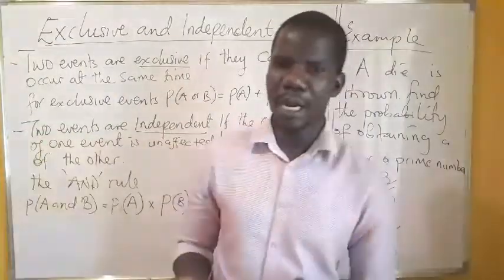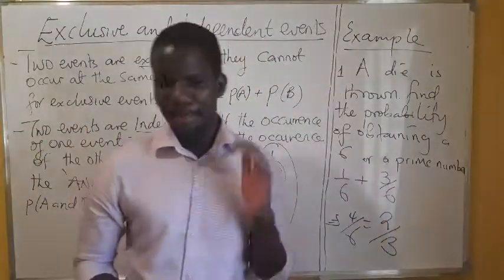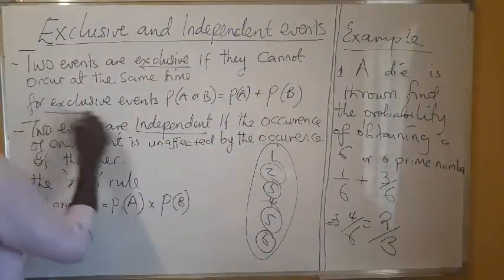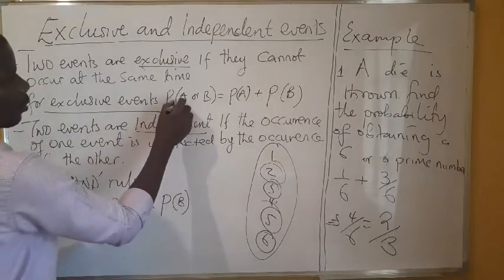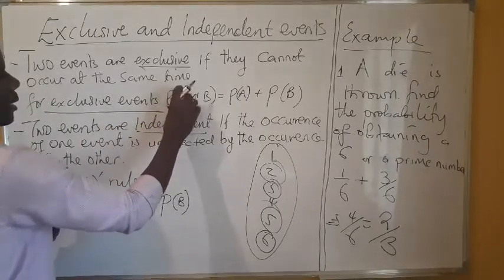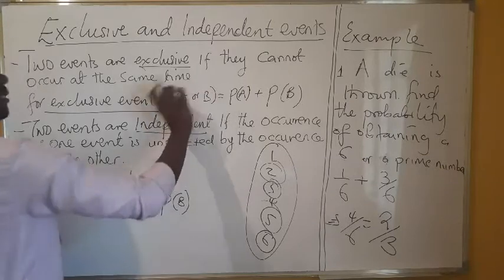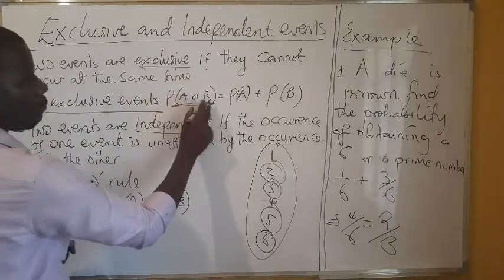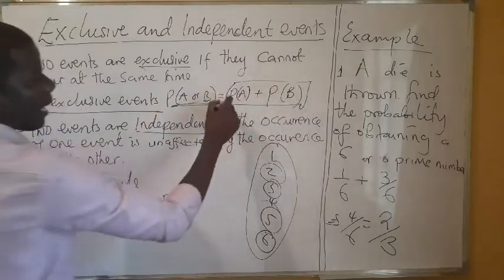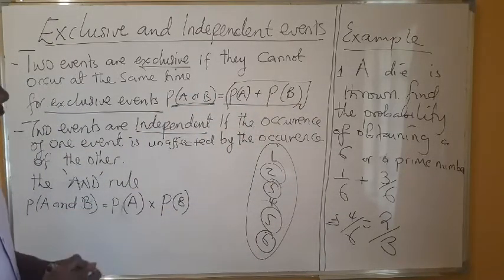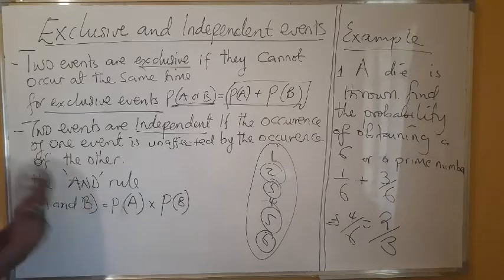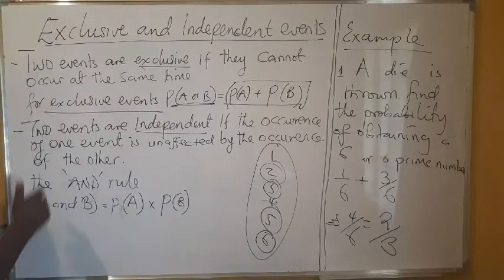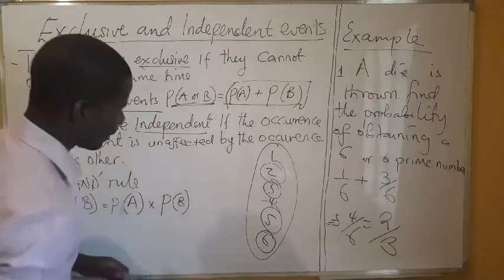So mutually exclusive events are events that cannot occur at the same time. For mutually exclusive events, if one occurs then the other will not occur. When we have the case of A or B, we apply the OR rule — we add the probabilities, as I have just done.